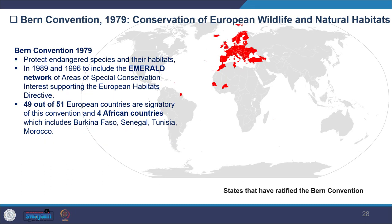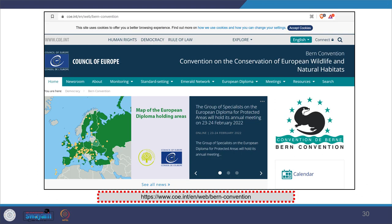The Bern Convention on Conservation of European Wildlife and Natural Habitats (1979) aims to protect endangered species and their habitats. It later included the Emerald Network of Areas of Special Conservation Interest, supporting European Habitat Directives. The Emerald network is an ecological network made up of Areas of Special Conservation Interest, implemented by the Council of Europe. 49 European countries are signatories, and 4 African countries — Burkina Faso, Senegal, Tunisia and Morocco — are also part of this convention.